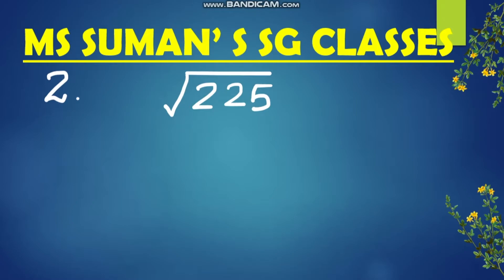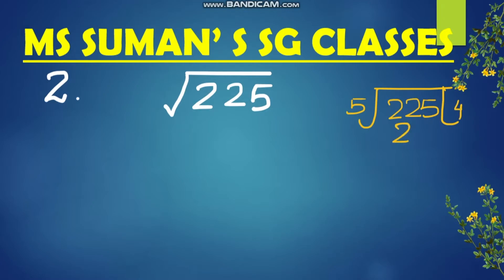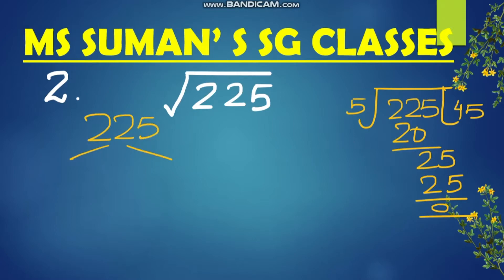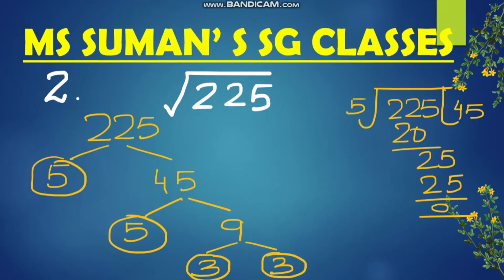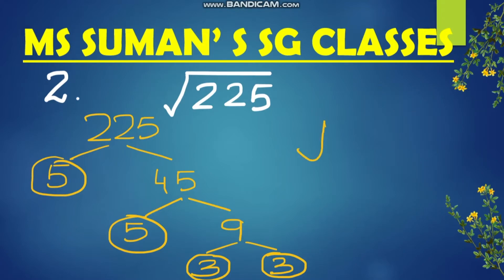Let's look at another example: 225. Since we know the divisibility rule of 5, we can divide this number by 5. 5 times 4 is 20 and 5 times 5 is 25, so 225 divides as 5 and 45. 5 is a prime number. For 45, we say 5 times 9 is 45, so circle the 5. For 9, we write 3 times 3. 3 is a prime number — it can only be obtained by 3 and 1.